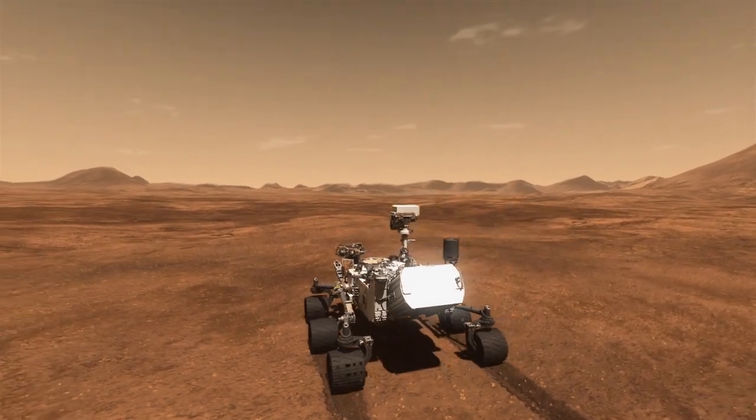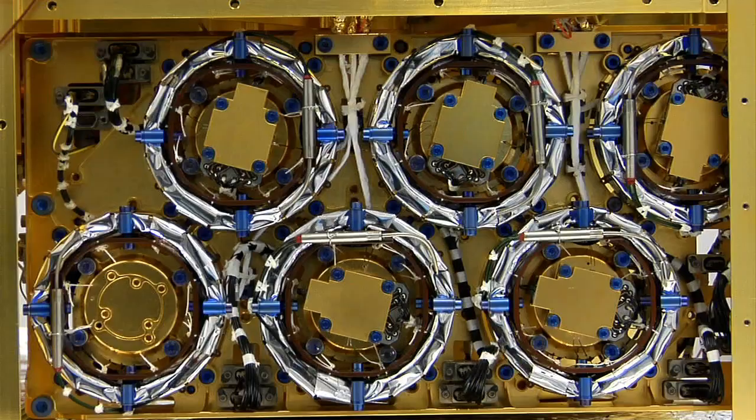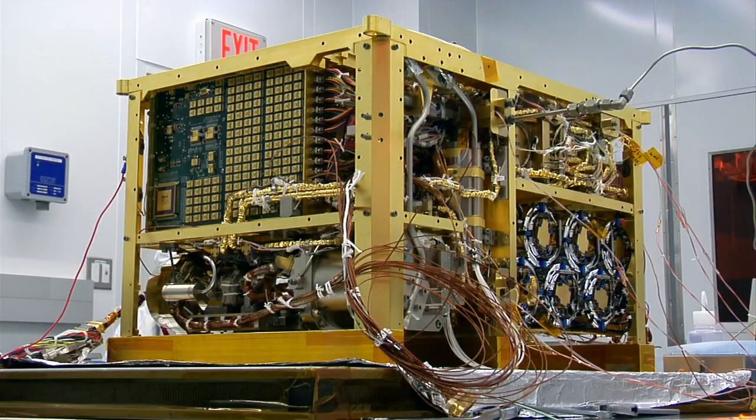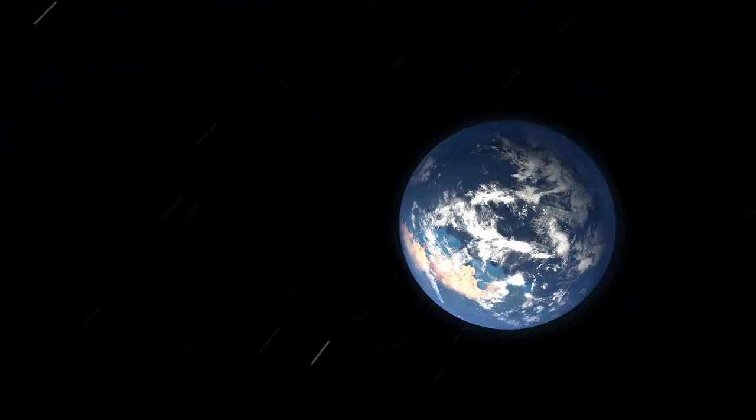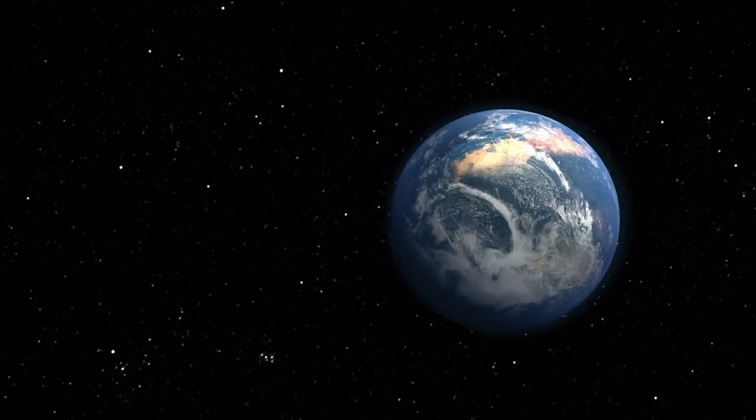SAM is on the Curiosity rover, and it's a suite of three instruments, and it has the ability to look for potential suitability for ever having past signs of life on the Martian surface.